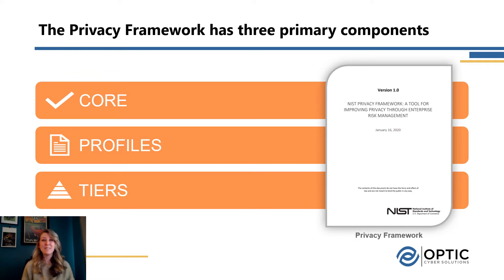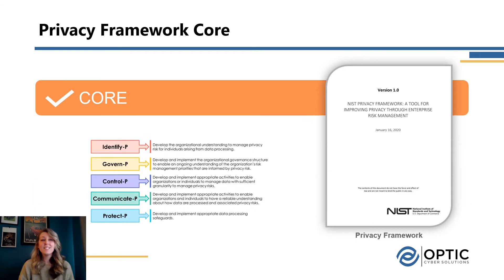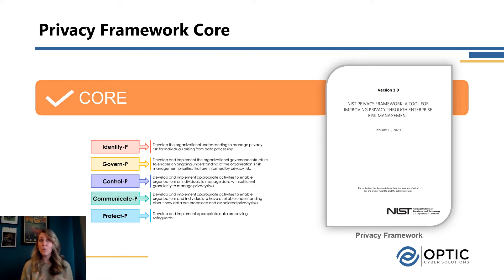The Privacy Framework has three core components and we'll walk through each of them. The first component is the core. The core is really a set of privacy outcomes that helps us define what does privacy mean and what do we need to be considering in our privacy program. Those outcomes are organized into functions that we can see here.